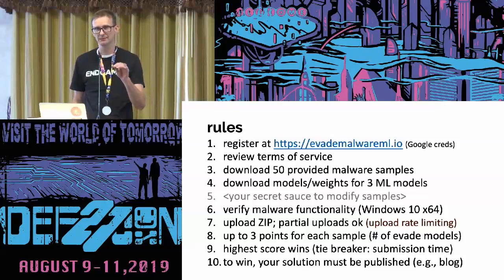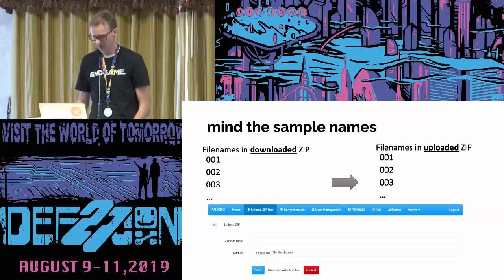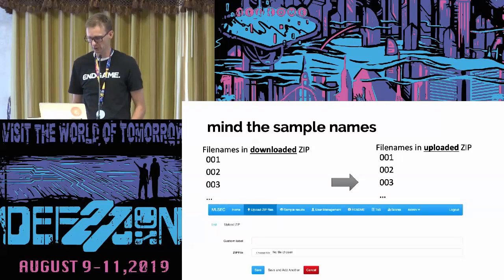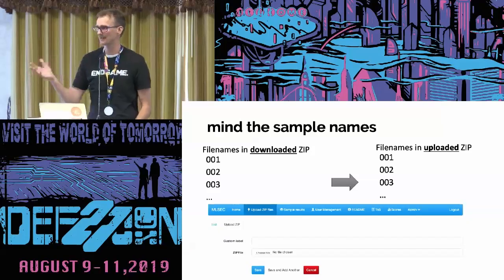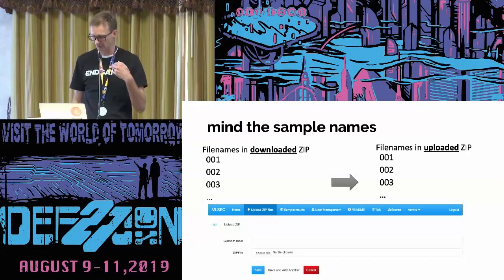A few tips to help get you started. When you download the samples, they will have names like 001, 002, 003, and when you modify and upload them, they should also retain those names — otherwise we have no idea which sample is which because you've changed the bytes. You download a zip file and you should upload a zip file as well.